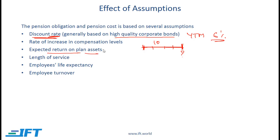Expected return on plan assets is another assumption. This is only used under US GAAP, and we'll see examples later on how this number impacts the cost reported in the profit and loss statement.